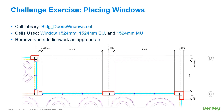Much of the restaurant floor plan has been completed. Doors, windows, furniture, and equipment symbols have been added using the cell libraries and cells created in the lessons in this module. In this challenge exercise, you will continue to place windows in the main dining area of the restaurant based on the dimensional data.